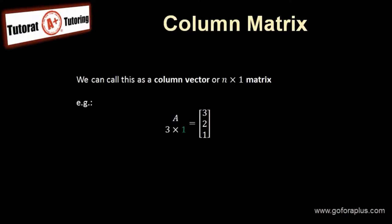So what is a column matrix? In this example, we can see it's matrix A, 3 by 1. We have only one column but we have 3 rows. No matter how many rows you have, if you have only one column, we also call this a column vector.